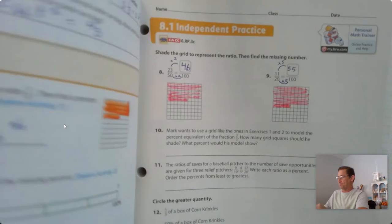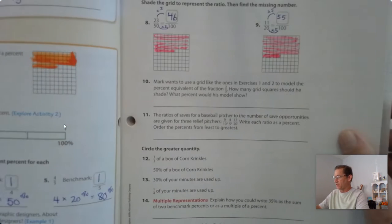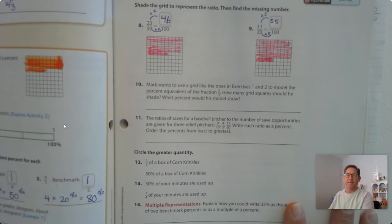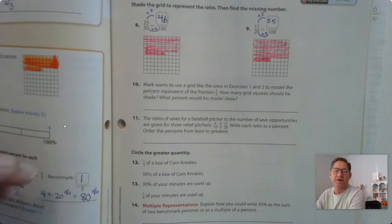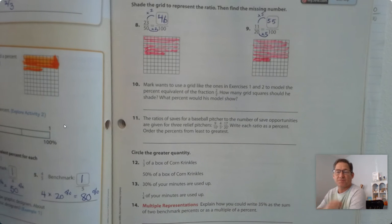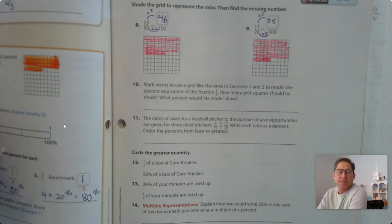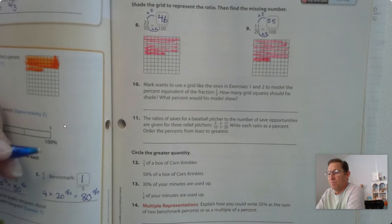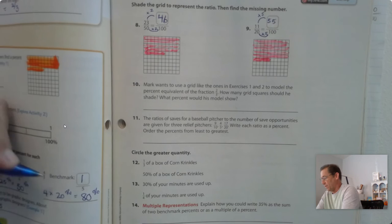Number 10. Mark wants to use a grid like the ones in exercise 1 and 2 to model the percent equivalent of the fraction 2 thirds. How many grid squares should he shade, and what percent would his model show?